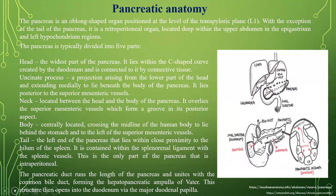With the tail of the pancreas, it is a retroperitoneal organ located deep within the abdomen, in the epigastrium and left hypochondrium regions. The pancreas is typically divided into five parts. The head, the widest part, lies within the C-shape created by the duodenum and is connected to it by connective tissue. The uncinate process is a projection arising from the lower part of the head, extending medially beneath the body of the pancreas, posterior to the superior mesenteric vessels. The neck is located between the head and body, overlying the superior mesenteric vessels which form a groove on its posterior aspect.